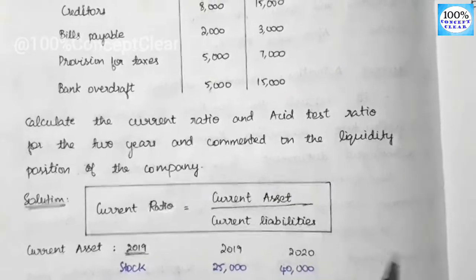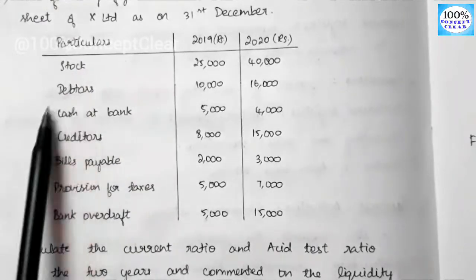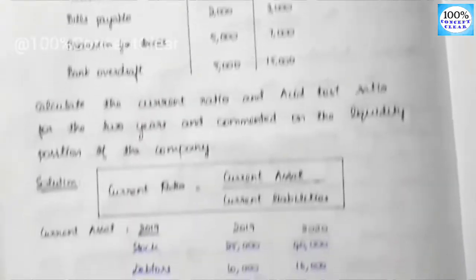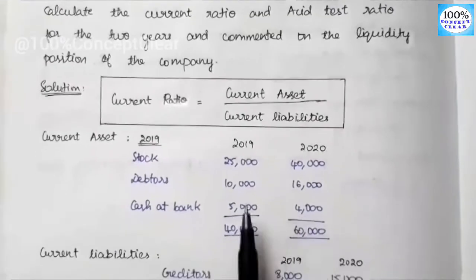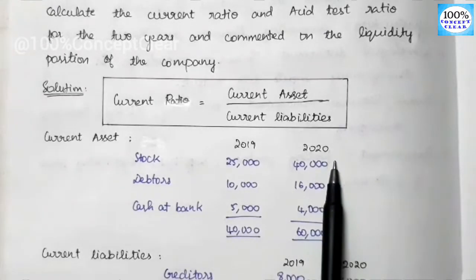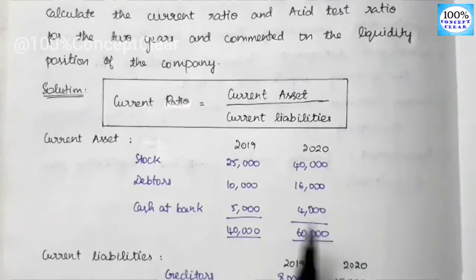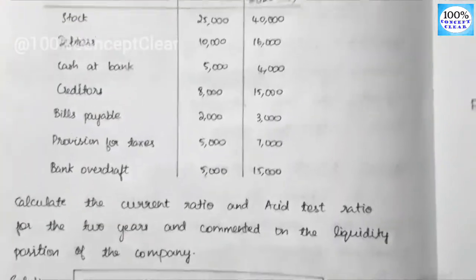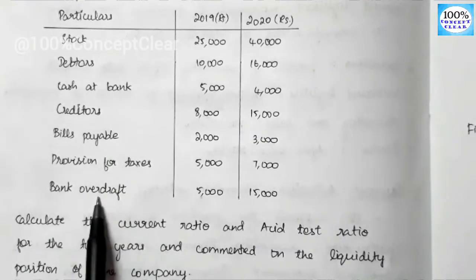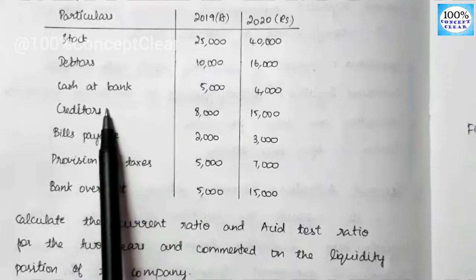Looking at this question, we have stock, debtors, and cash at bank — these three are the current asset items, because we can convert them to cash within one year. For current liabilities, we have creditors, bills payable, provision for tax, and bank overdraft — four items we need to pay within one year. In 2019, current assets total 40,000 and in 2020, 60,000. Current liabilities: 2019 is 20,000 and 2020 is 40,000.